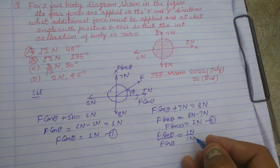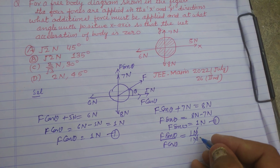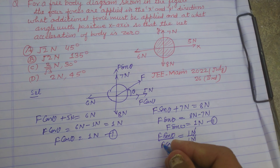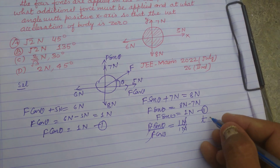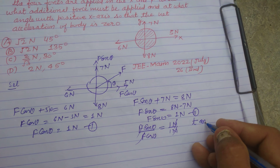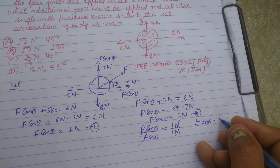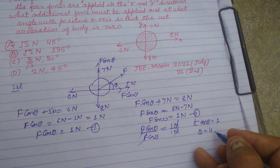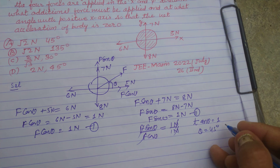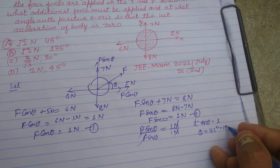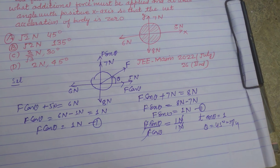Dividing the second equation by the first: the newtons cancel and F cancels, giving tan theta equals 1. Therefore theta equals 45 degrees, or pi by 4.